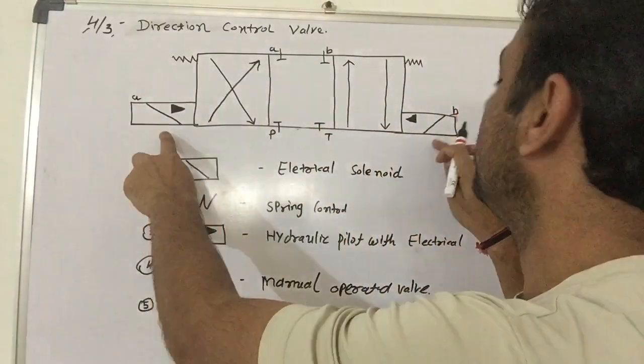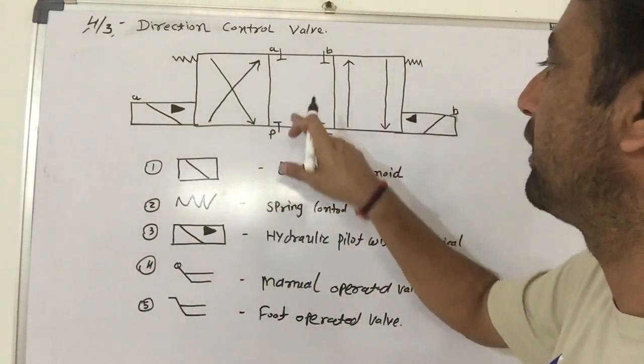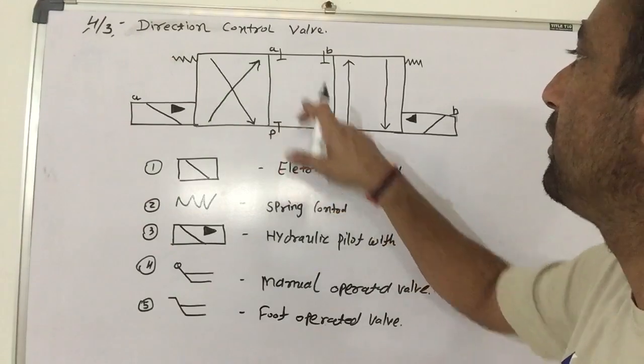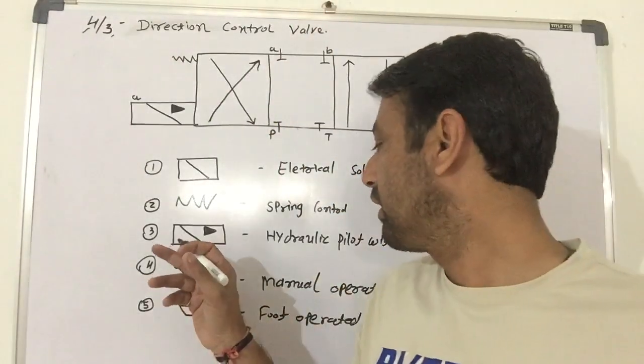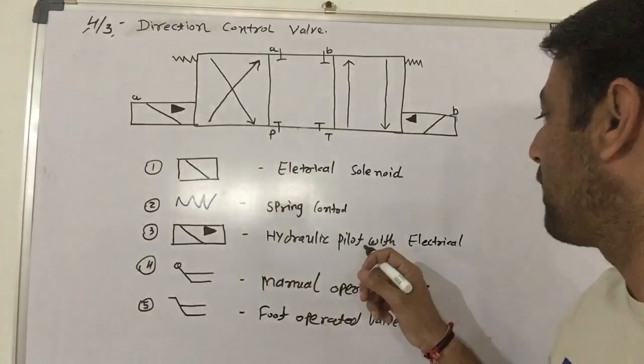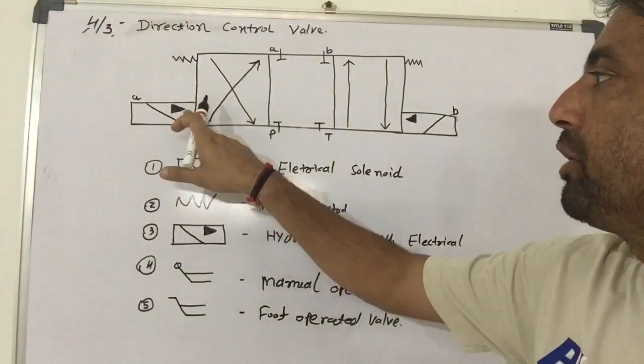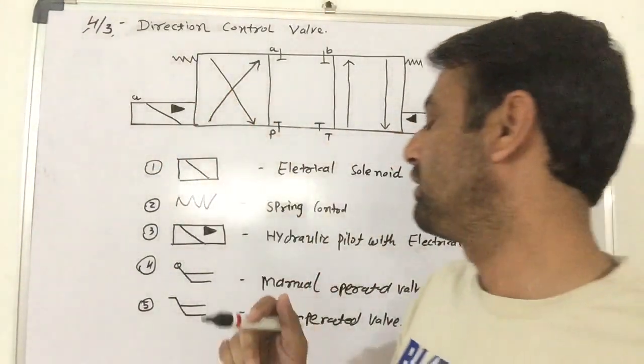When both coils operate, it will always remain in this position. That means P and T and A and B are in this condition. If this symbol is given here, that means Hydraulic Pilot with Electrical, Internal Pilot.